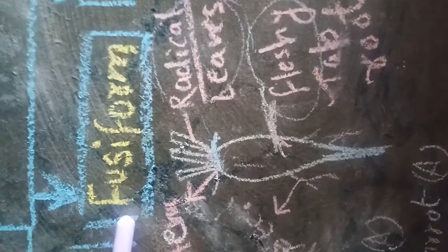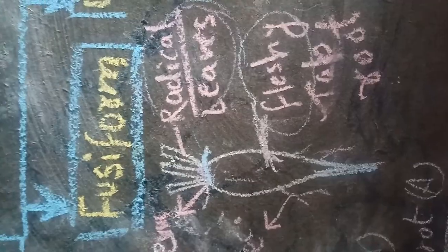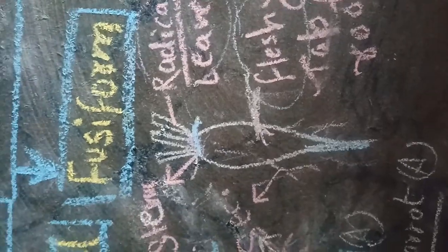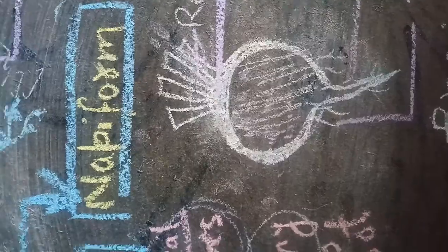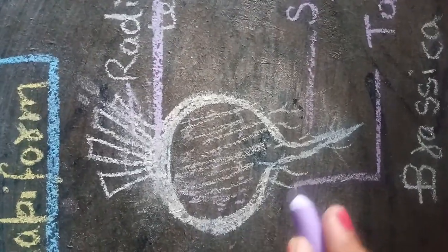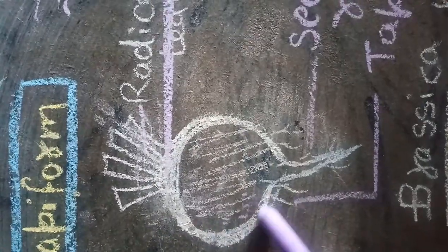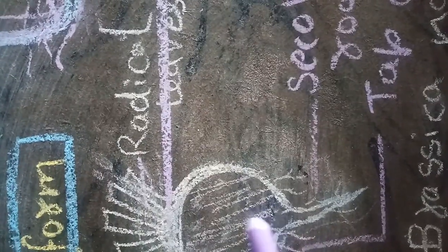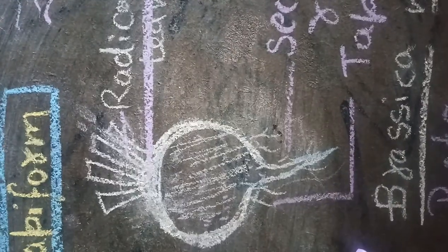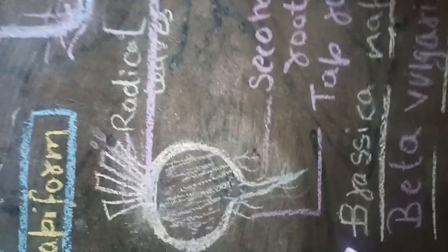Second is fusiform. The primary root is spindle-shaped, tapering at the base and apex, and the fusiform stem arises from the radical tip. Next is napiform. Napiform primary root is spherical, tapering at the end. The basal part of the fleshy root is the hypocotyl. Example: turnip and sugarbeet. Scientific name of turnip is Brassica napus.